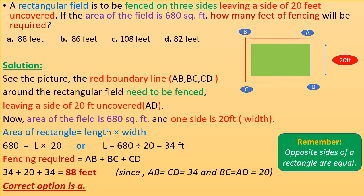The area of the rectangular field equals length times width, so 680 equals L times 20. Therefore L equals 680 divided by 20 equals 34 feet. The fencing required equals AB plus BC plus CD.